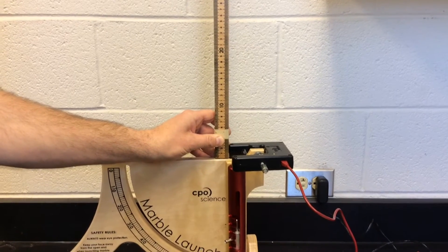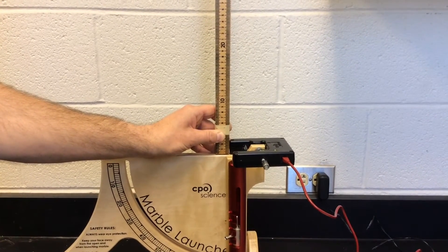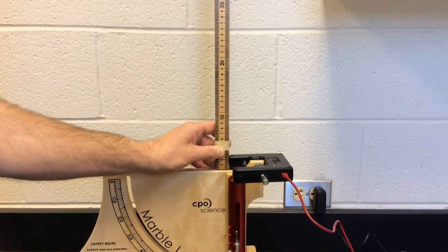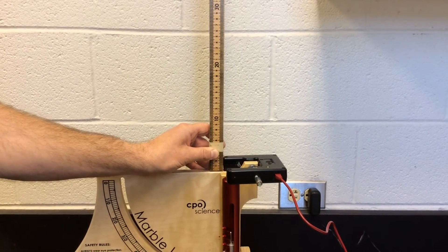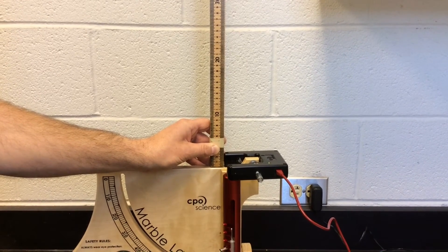There's a couple methods for figuring out how high the marble went. The first is you can just eyeball it when the marble gets shot up in the air. Have someone in your group look at the height of the marble against the meter stick.